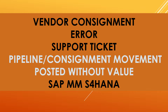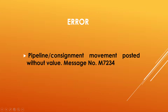Hello everybody, Swaminathan here. Today I got a support ticket for vendor consignment in SAP ERP. The error message they encountered is 'pipeline consignment movement posted without value.' Because of that, they are not able to do transfer posting in MIGO transaction code. The error is pipeline consignment movement posted without value, message number M7234.